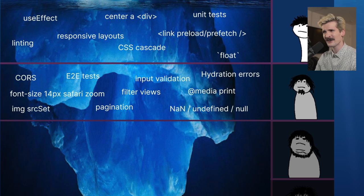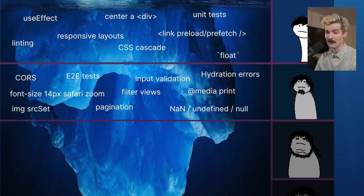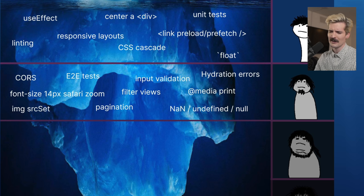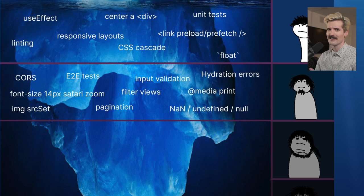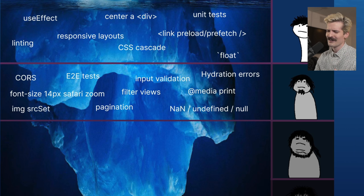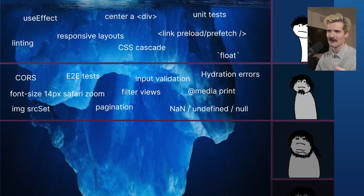Hydration errors — if you're not already a deep React dev doing SSR, you might never have had one, in which case I envy you because they suck. Hydration errors are what happens when the server generates HTML with React and the client resumes that HTML, but the results are different. The most common time I see this is when the server's in a different time zone than the user's device and they render a date time. You can also have this if you have a Math.random that runs on both server and client. They get better with server components, but you still have to worry about them.